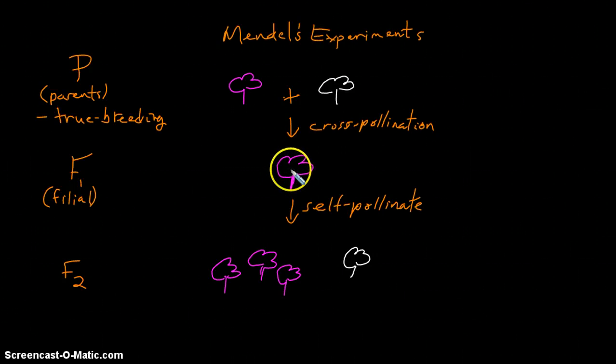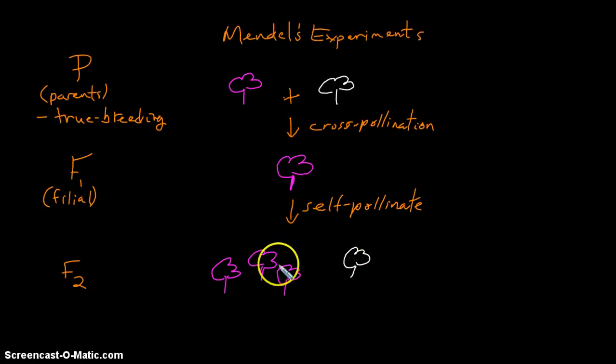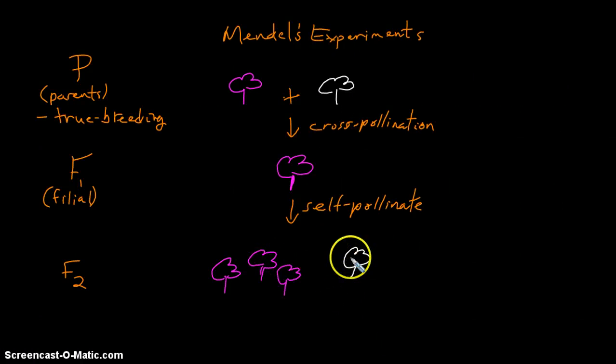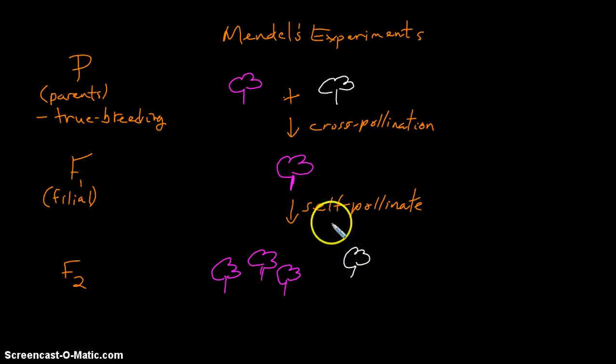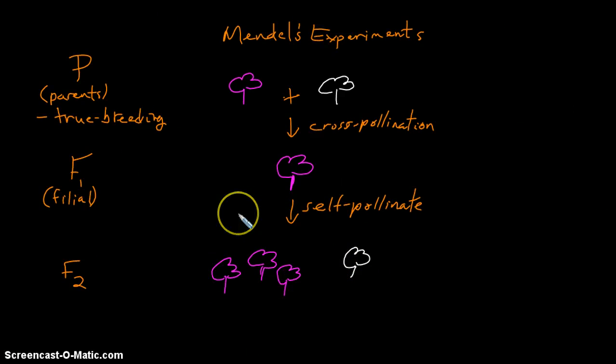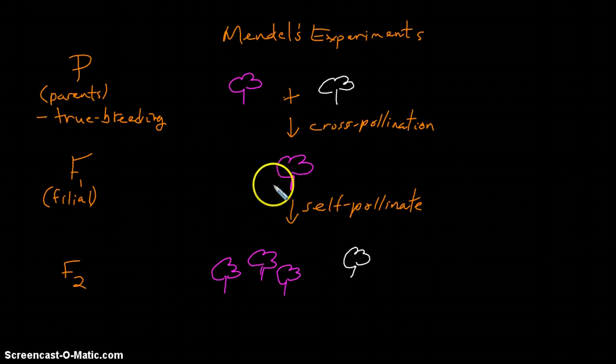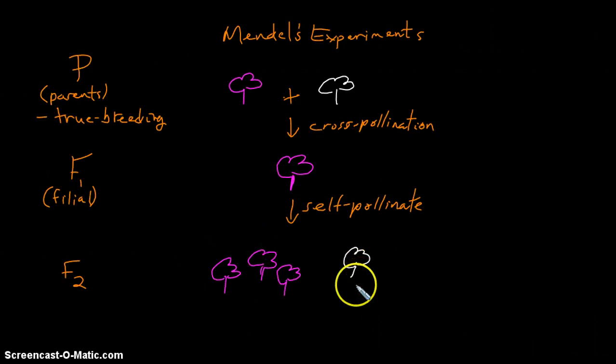He saw that traits were reserved or conserved through generations and that certain traits could be dominant to others. So it was significant that he allowed the experiments to continue on for a third generation so he could see how certain traits reappeared.